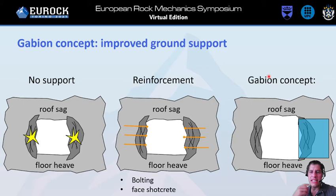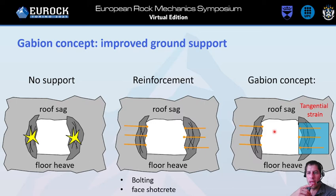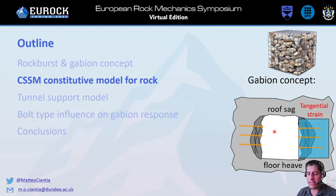To reproduce this complex behavior, we can use the GABION concept, which simplifies the whole geometry and problem. Basically, roof sag and floor heave are represented by a tangential strain that is squeezing our wall face. This can be easily modeled because of the simplified geometry using finite elements. Independent of the simplifications introduced by the GABION concept, we need a good model to reproduce the rock behavior if we want realistic results.